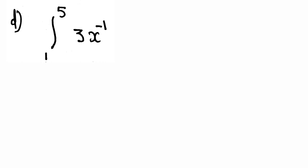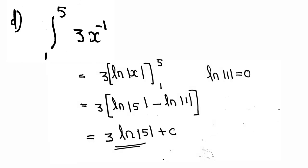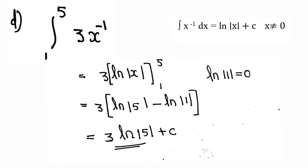Last problem: integral from 1 to 5 of 3 times x raised to minus 1. This equals 3 times the integral of x raised to minus 1, and since the integral of x raised to minus 1 is ln x, we get 3 times ln x evaluated from 1 to 5. That is 3 times (ln 5 minus ln 1). Since ln 1 equals 0, the answer is 3 times ln 5.